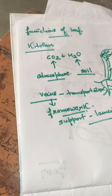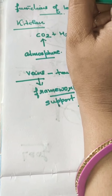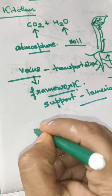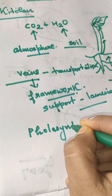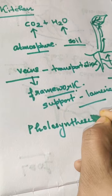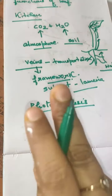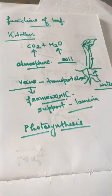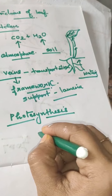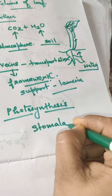The main function of the leaf is to prepare food by the process of photosynthesis. Before that, let me make clear what stomata is. Stomata is the tiny pore which is present on the leaf and which is guarded by two guard cells.